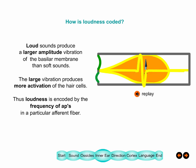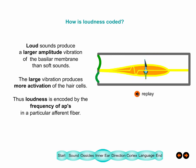For loud versus soft sounds, in one case the basilar membrane is displaced a lot and in the other just a little. A large displacement rocks the hairs a lot, producing a large change in firing frequency. A soft sound produces only a small displacement of the hairs and a small change in frequency. So how loud a sound is, is dependent on firing frequency — loudness is signaled by frequency, while which frequency is signaled by which hair cell.